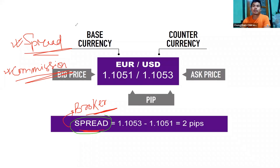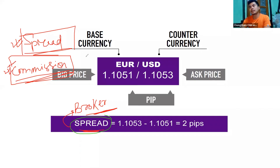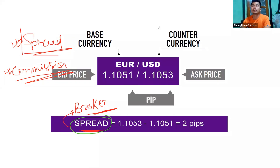So, the concept of spread — the spread is the difference between the bid and ask price. This is how brokers earn money: through the spread and through commission. Brokers make profit from the spread.